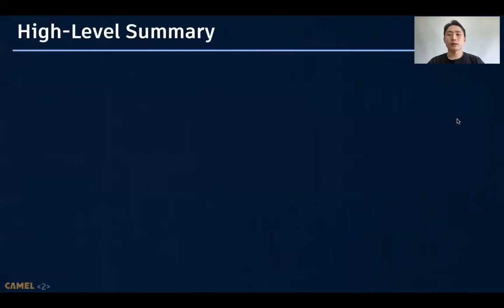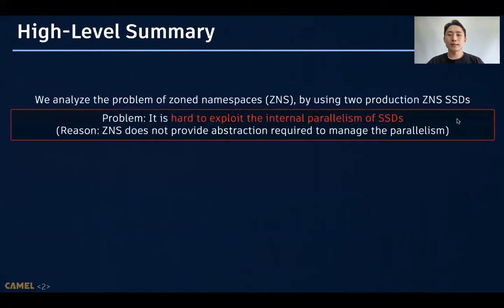Before we move on to the main talk, I'll give you a high-level summary of the talk. Zone namespaces, also known as ZNS, is an emerging storage interface which can make SSDs cost-efficient. In this work, we analyzed the problem of ZNS by using two production ZNS SSDs. The problem is that it is hard to exploit the internal parallelism of SSDs, since ZNS does not provide abstraction required to manage the parallelism.